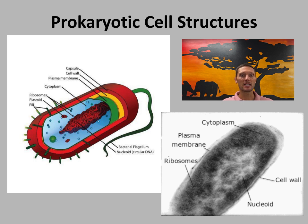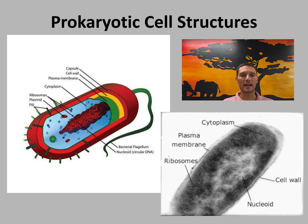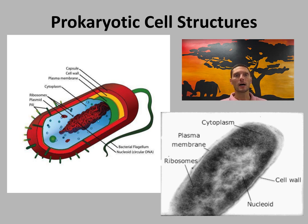Prokaryotes have evolved to exist pretty much everywhere on the planet. Some of their characteristics: they all have a cell wall containing peptidoglycan, which helps prevent bursting of the cell. The cytoplasm has a single chamber with no additional membranes, and the cell has no internal membrane-bound organelles besides ribosomes — prokaryotes do not have a nucleus. The ribosomes of prokaryotes are called 70S ribosomes — smaller than those found in eukaryotes. The 'S' stands for Svedberg units, which is the rate at which a particle sinks during centrifugation.